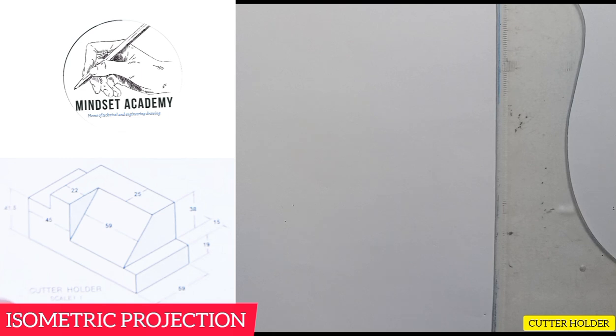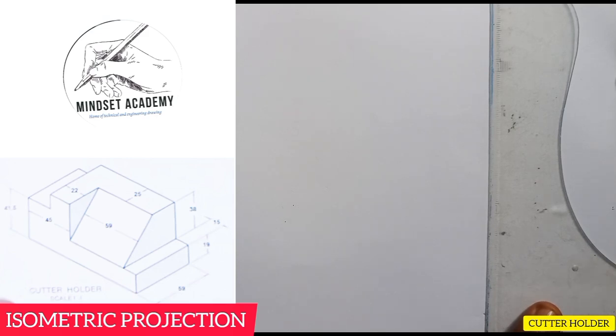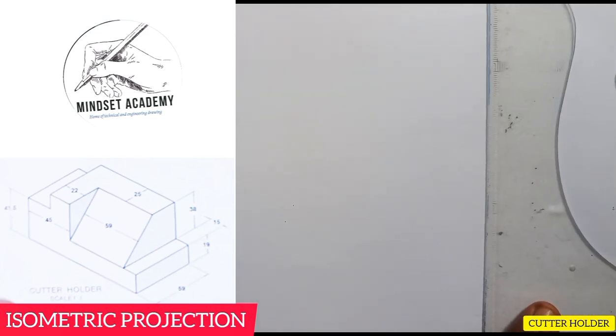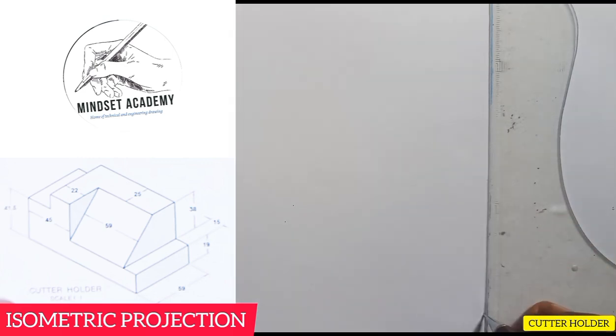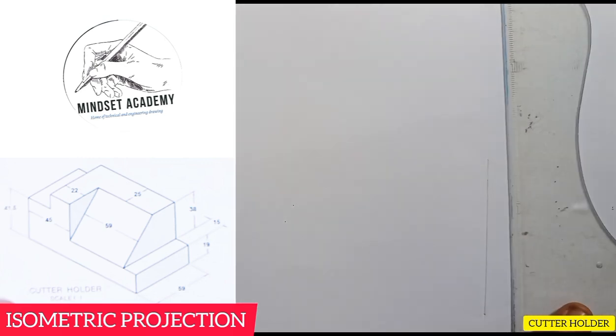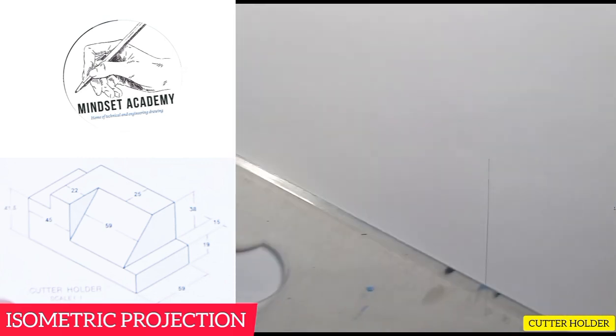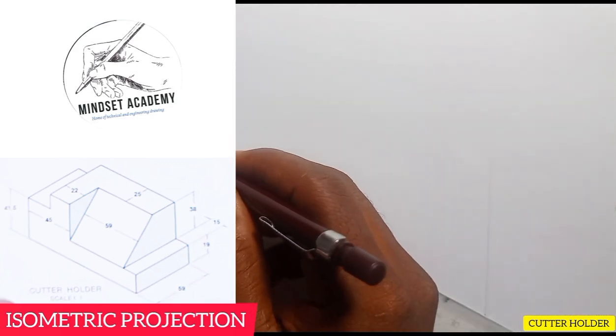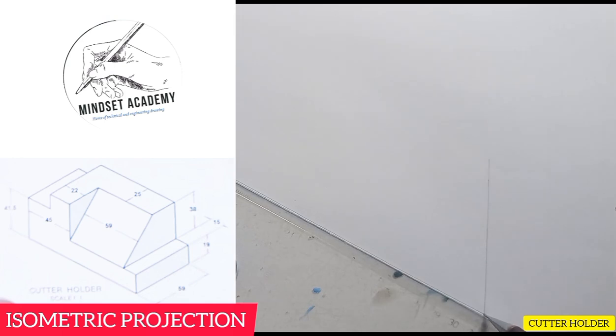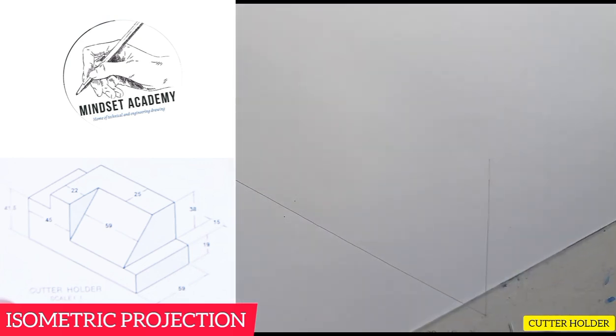So the first thing you have to do when you hear the word isometric projection is for you to draw your isometric axis. That is you draw your y axis as in the vertical line this way, then you draw the horizontal line this way, put the inclined line, and the V axis also this way.